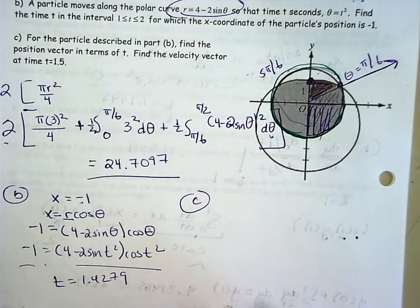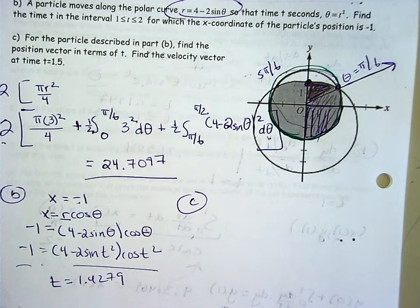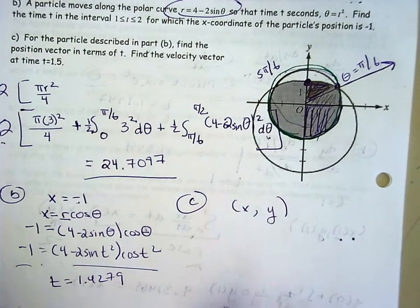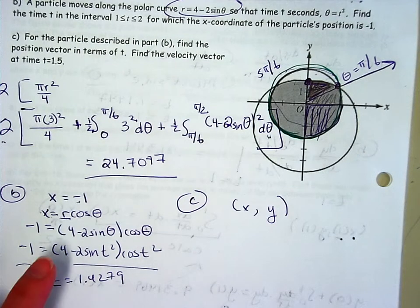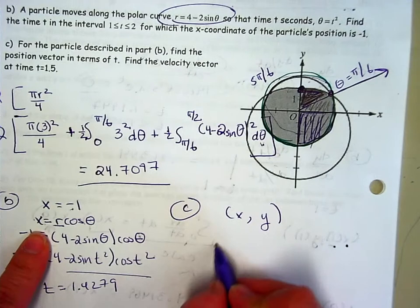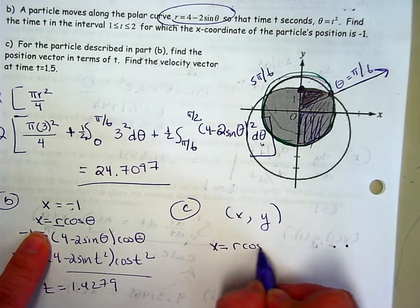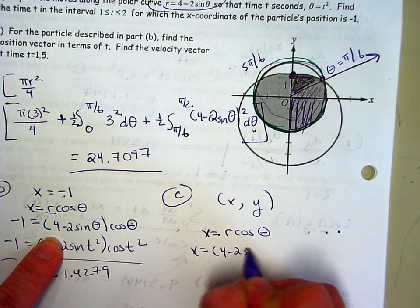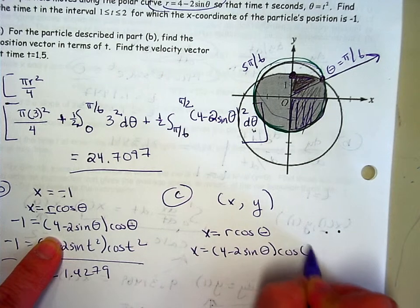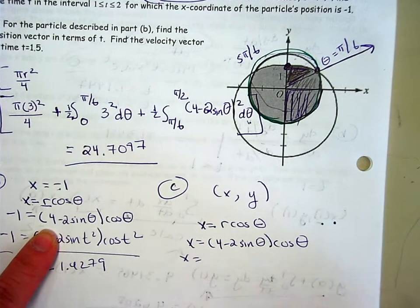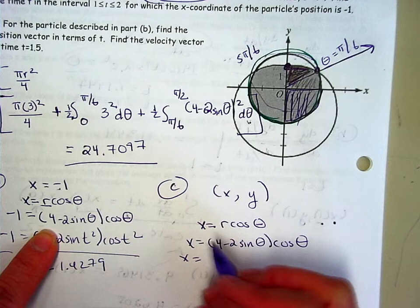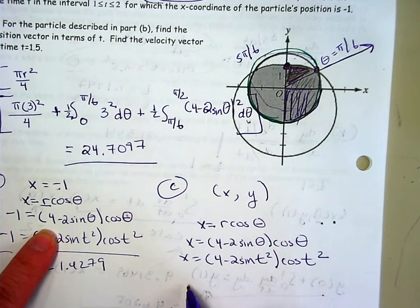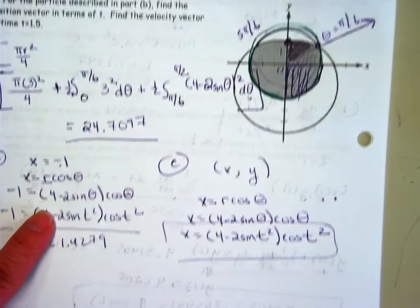Part C, find the position vector in terms of t. So you should be thinking, I need an x and I need a y. Your position vector, again, you're going to use the conversion equation. x = r cos(θ). x = (4 - 2sinθ) cos(θ). They want this in terms of t, so the only variable I should see here is t. Replace the θ with t². There is your x position vector.